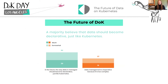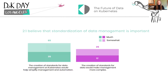Finally, we wanted to understand what would make people's lives easier for running data on Kubernetes. We showed people a series of statements asking which they agree with more. We asked about the concept of declarative data — an ability to declare an outcome for your data and have Kubernetes do the work, just like it does for your app or microservice. A majority believe that data should become declarative, just like Kubernetes. Our data suggests that a lack of standards makes DOK more challenging to implement, so we asked whether the creation of standards for data would simplify management and automation or make it more complex — a two-to-one majority believed it would help simplify.